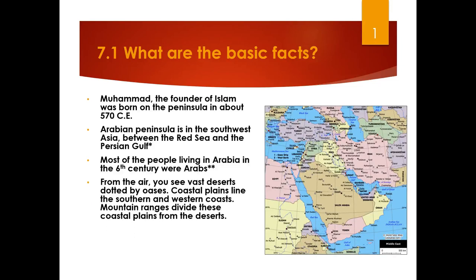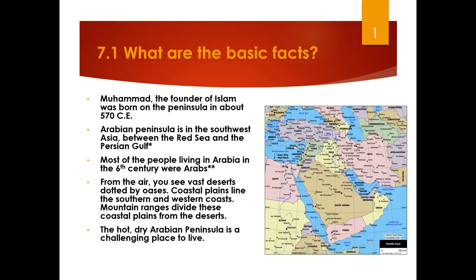From the air, if you were to fly over the Arabian Peninsula, you would see vast deserts dotted by oases. There would be coastal plains along the shores — where most people lived, along the southern and western coasts — and mountain ranges separated the coastal plains from the deserts. The overwhelming majority of population centers would be fairly close to the coast because this is a very hot, inhospitable climate. In fact, there are some parts of Saudi Arabia that are basically uninhabitable.